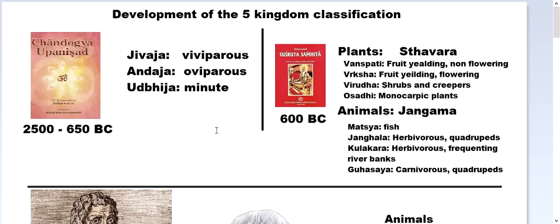Then around 600 BC another book was written, the Susruta Samhita, also a Sanskrit book. So early classification started in India in Vedic literature. This book classified plants as Sthavara (immobile) and animals as Jangama (mobile). Plants were further divided into Vanspati (fruit-yielding and non-flowering), Vraksha (fruit-yielding and flowering), Viruddha (shrubs and creepers), and Usadhi (monocarpic plants).